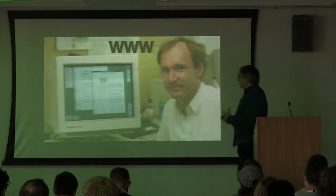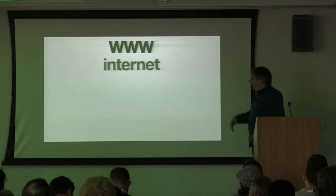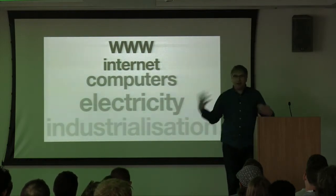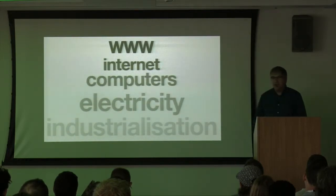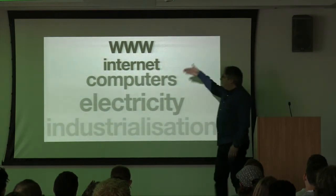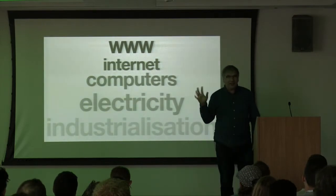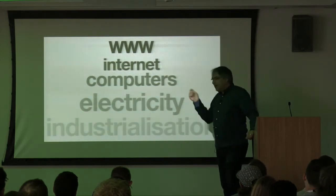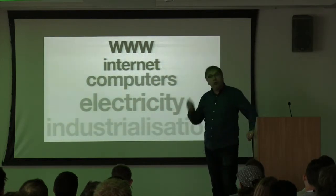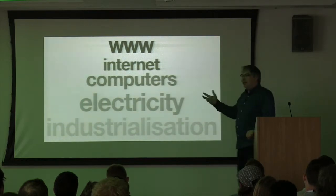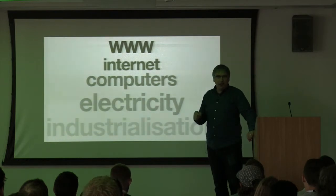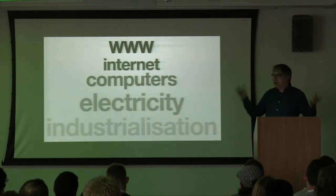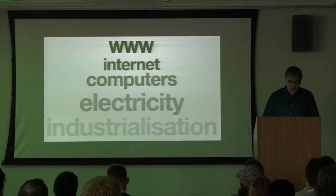The World Wide Web is a great example of a technology that builds on all technologies before it. The Web is built on the internet, which requires computers, which require electricity, which required the Industrial Revolution. There seems to be an inevitable progress toward the World Wide Web. But in some ways it's also like natural selection — there's inevitability to the overall trend, but the details were not set in stone. Something like the Web was probably inevitable, but the Web we got was not inevitable. That was down to the work of the people thinking about it and doing it.